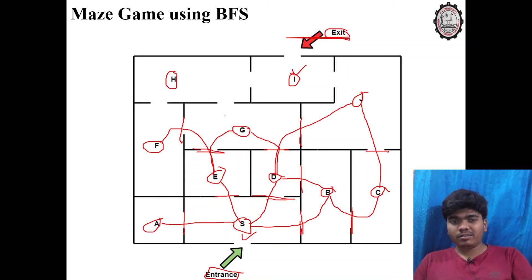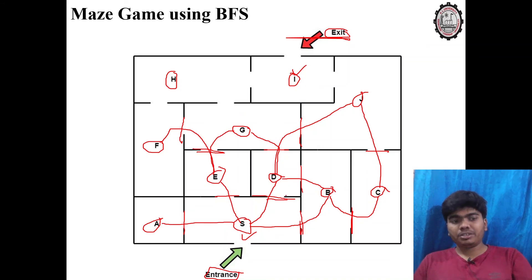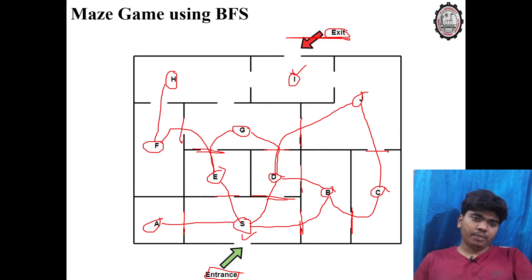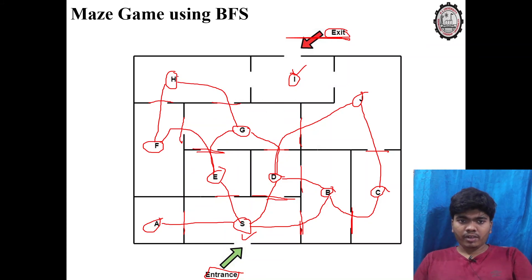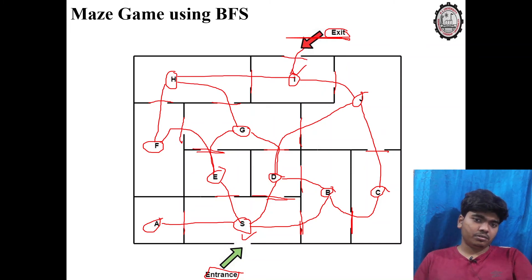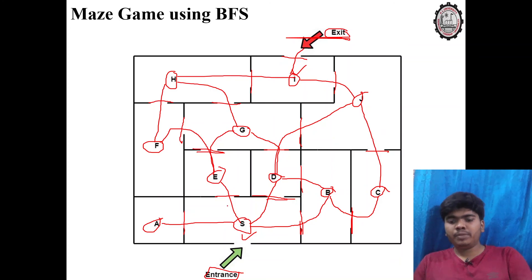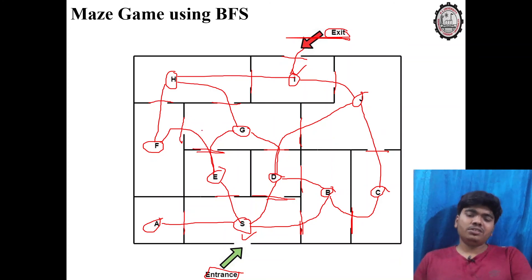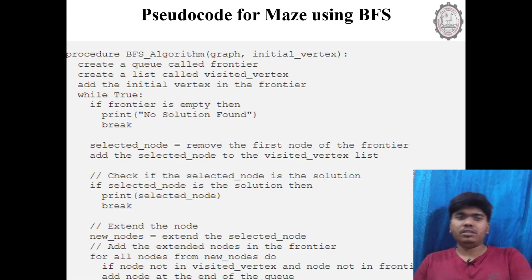The number of gates between nodes is a major factor to consider. Traveling from F to H is one gate, G to H is one gate, H to I is one gate, J to I is one gate, and from I you reach the exit with one gate. In this way we can use the Breadth First Search algorithm starting from the node list to find the goal state through the maze.